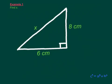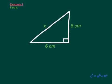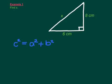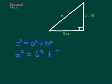So if we look at an example, here we've got a triangle with side lengths 6cm and 8cm, and we're missing the length of the hypotenuse X. So if I apply Pythagoras' Theorem, I'm going to plug in X squared equals 6 squared plus 8 squared. It doesn't matter if you write 6 squared plus 8 squared or 8 squared plus 6 squared.